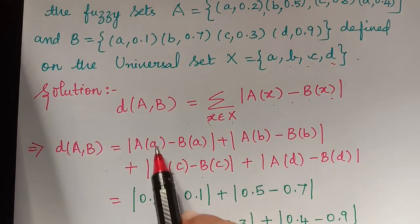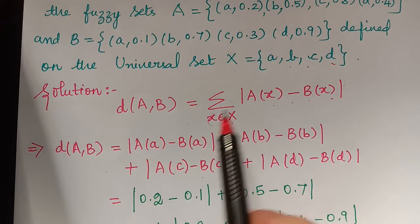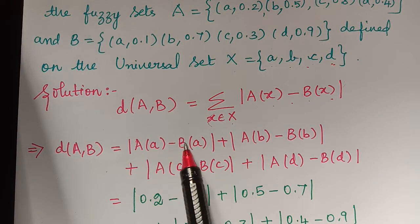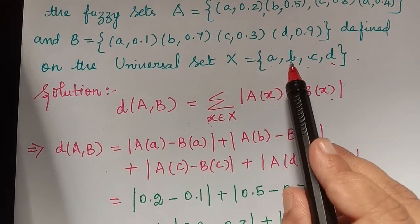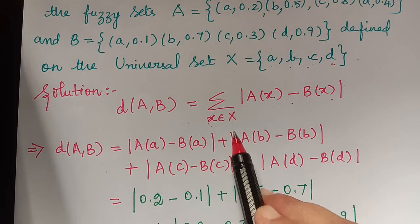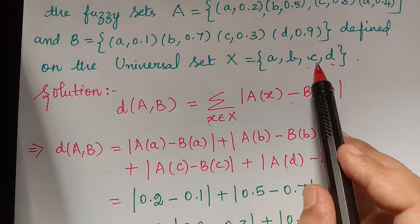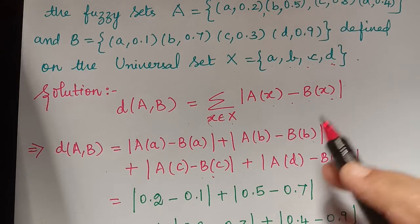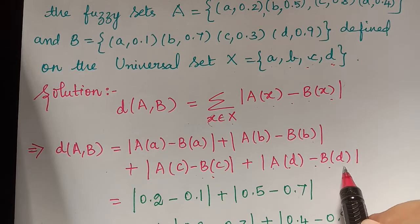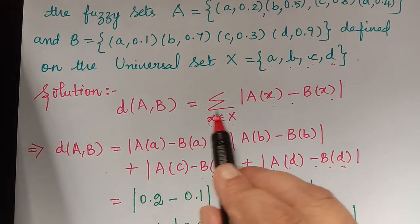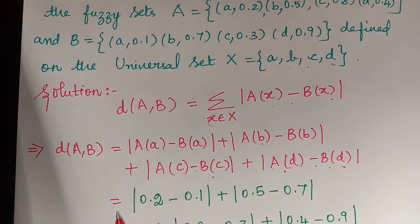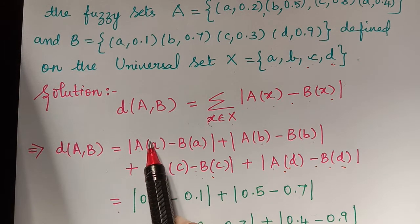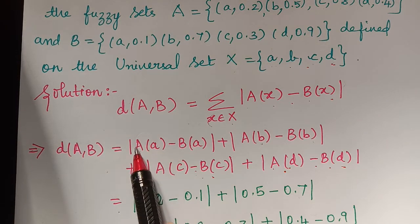So D(A, B) equals: when x = a, modulus of A(a) minus B(a); when x = b, modulus of A(b) minus B(b); when x = c, modulus of A(c) minus B(c); and when x = d, modulus of A(d) minus B(d). Since we have the summation, we are adding up all four values.